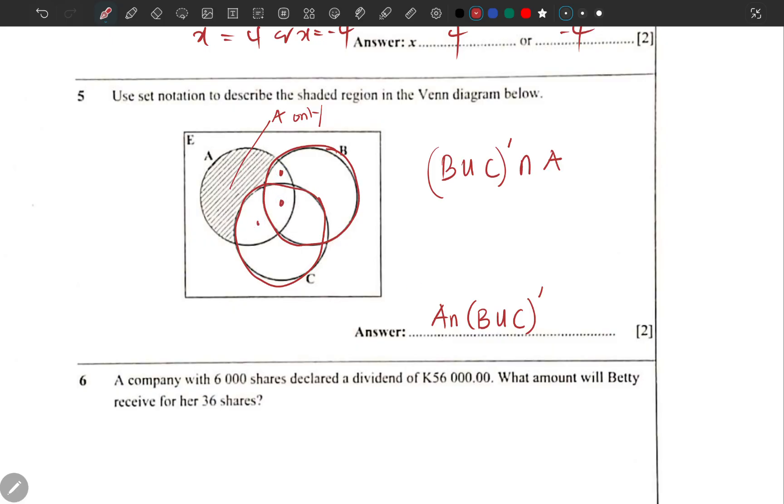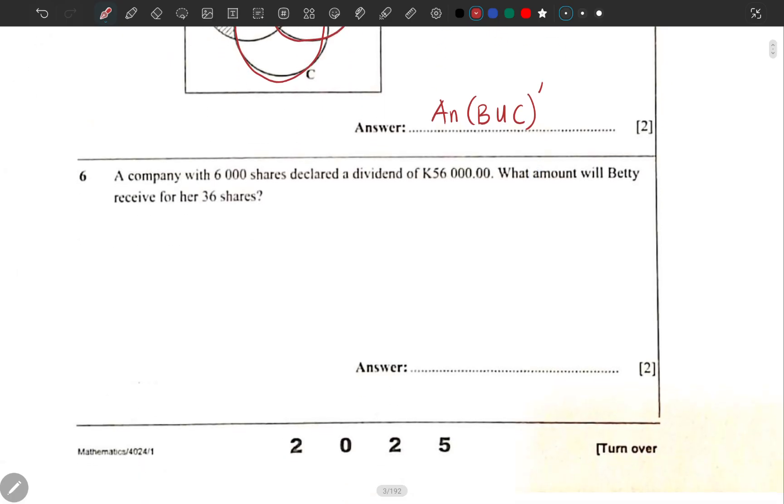A company with 6,000 shares declared a dividend of K56,000. What amount will Betty receive for her 36 shares? So 6,000 shares goes for 56,000. What about 36 shares? How much will be the dividend? If you want, you can actually find the value of one share in terms of dividend.